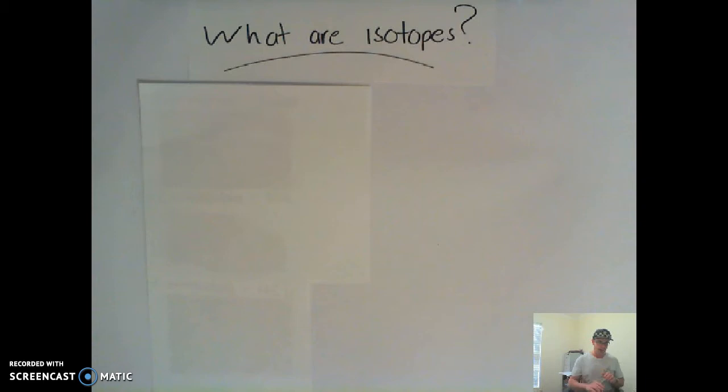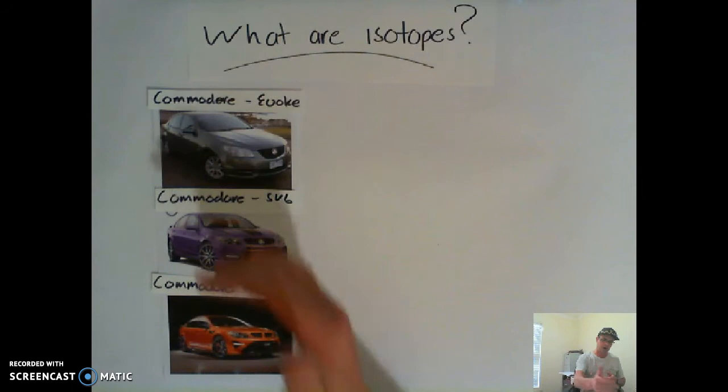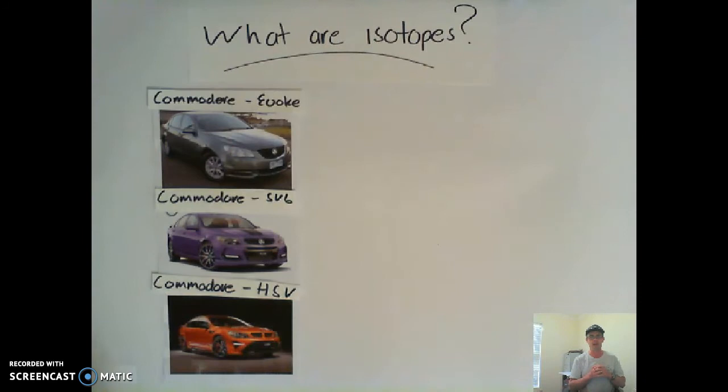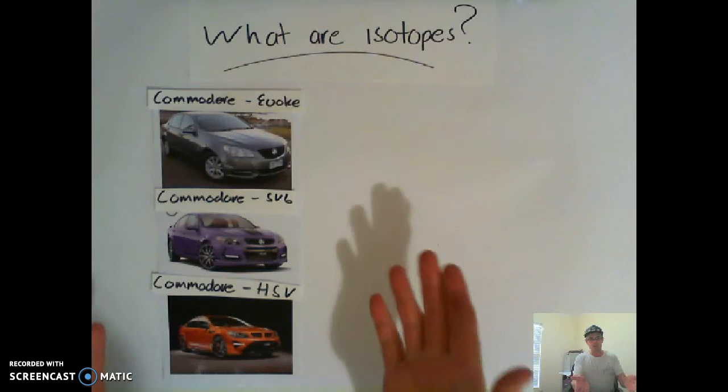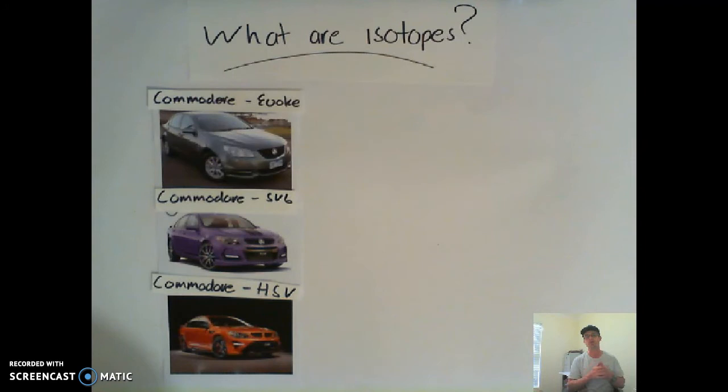So I want to use an analogy when it comes to cars. If I pull this off here, we can see I've got three different versions or three different models of our Commodore. Everyone should know the Commodore, the great Aussie car. So we've got the Commodore Evoke here, which is grey. We've got our Commodore SV6, which is the purple one here. And we've got the cream of the crop, the Commodore HSV. Now the thing that makes them all Commodores is their distinct styling. Even though they've got little different options on them, they all look the same. They're all still a Commodore.